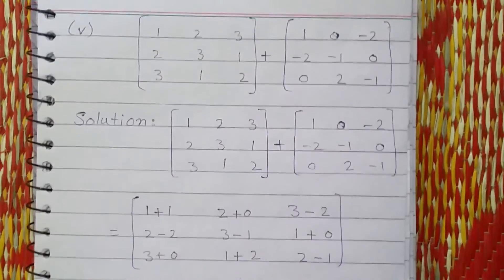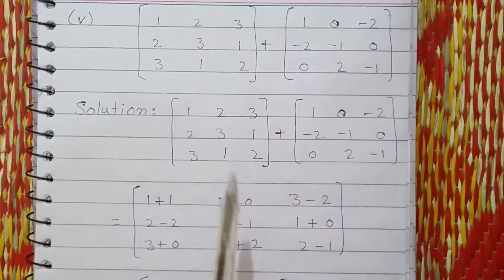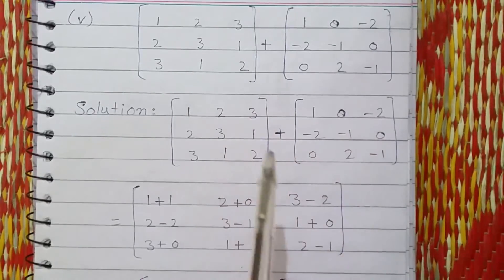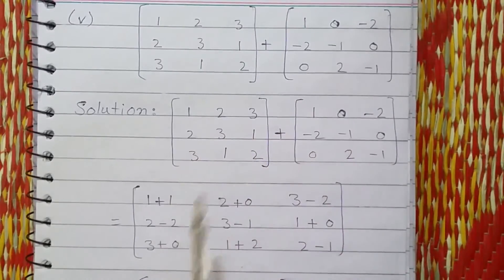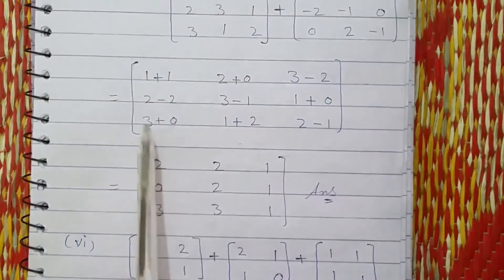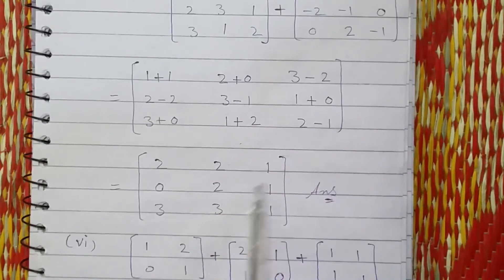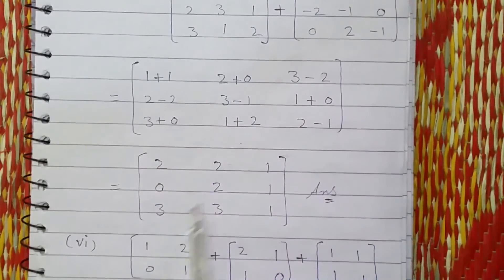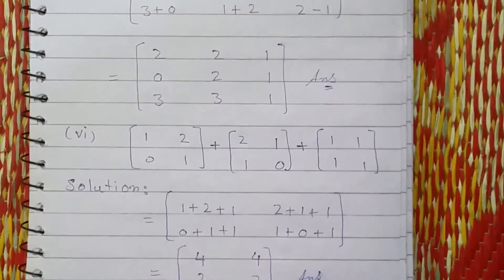The same method applies — corresponding elements are added: 1 plus 1; 2 plus 0; 3 plus minus 2 giving 1; 2 plus minus 2 giving 0; 3 plus minus 1 giving 2; 1 plus 0; 3 plus 0; 1 plus 2. Results: 1 plus 1 is 2; 2 plus 0 is 2; 3 minus 2 is 1; 2 minus 2 is 0; 3 minus 1 is 2; 1 plus 0 is 1; 3 plus 0 is 3; 1 plus 2 is 3; 2 minus 1 is 1.